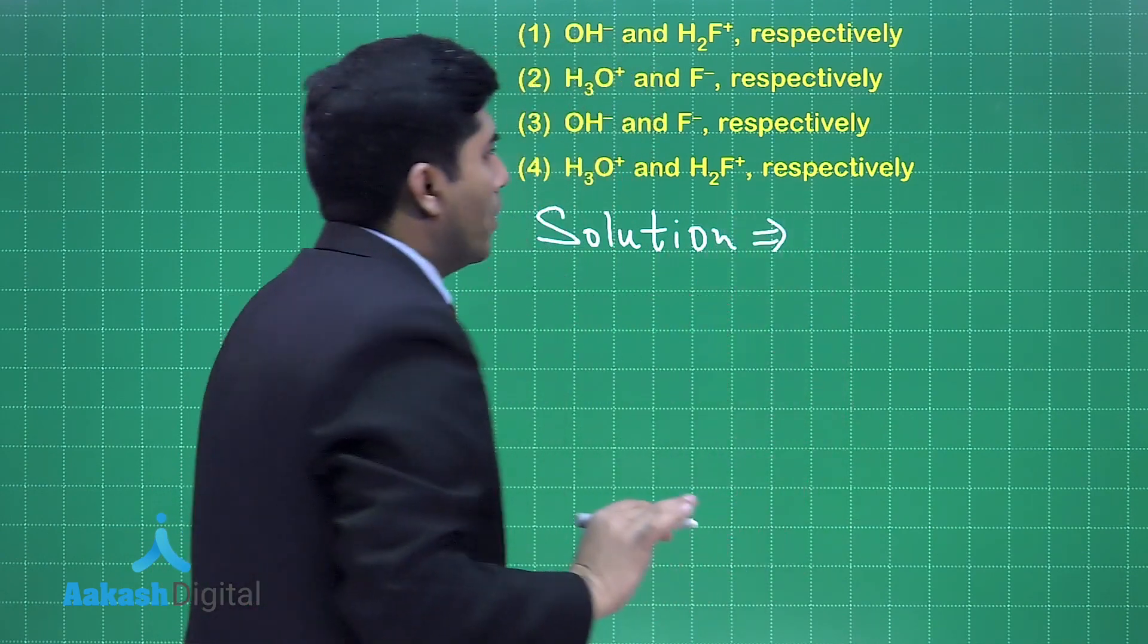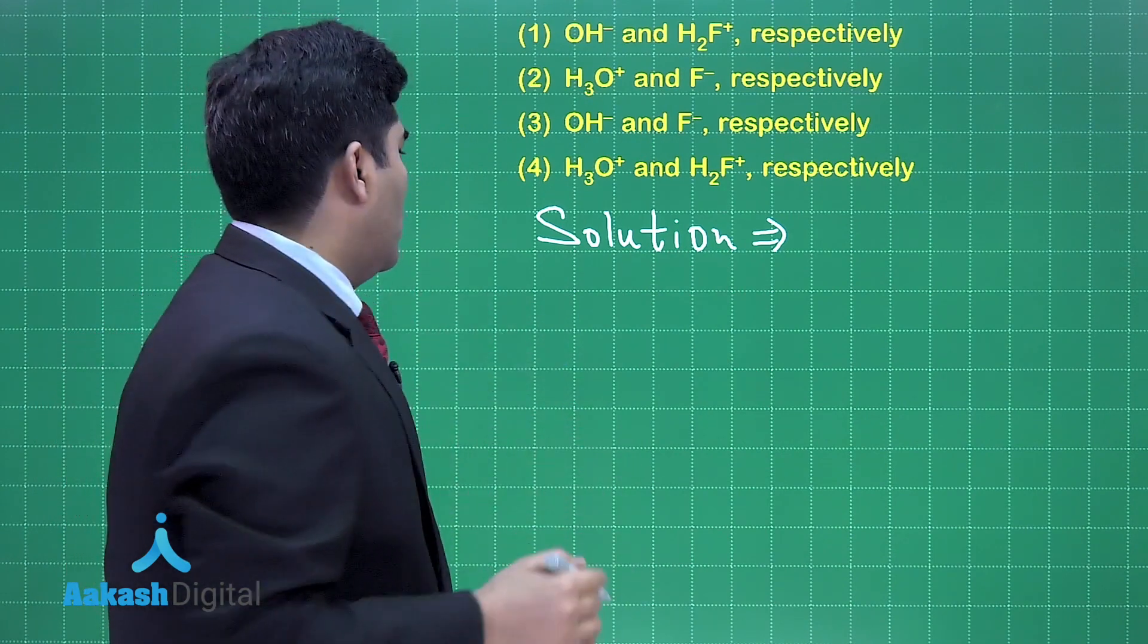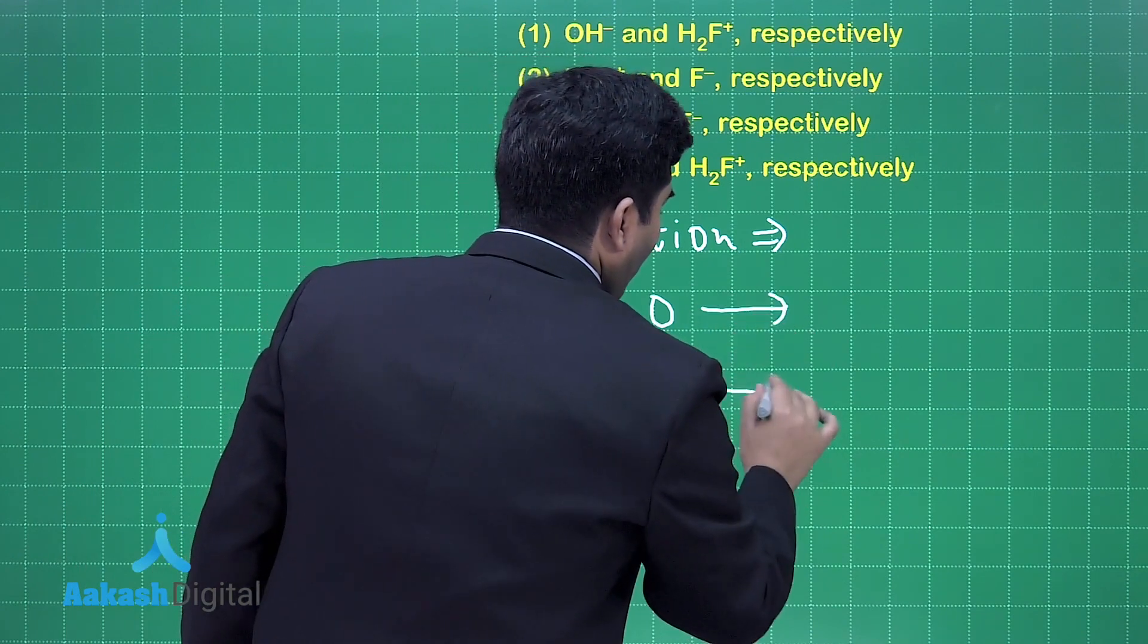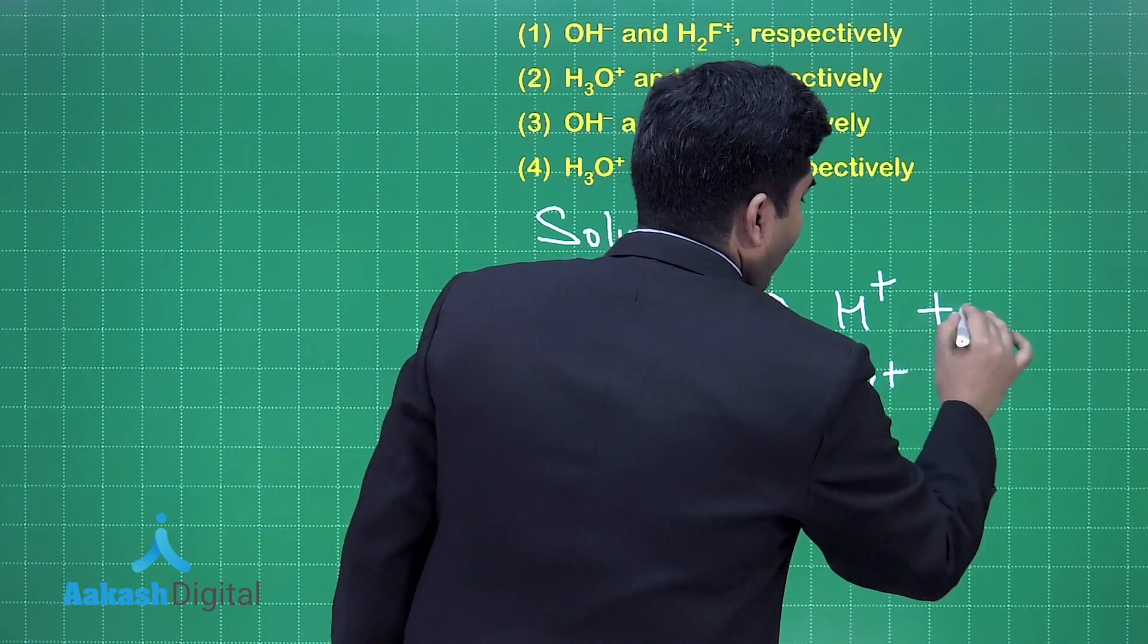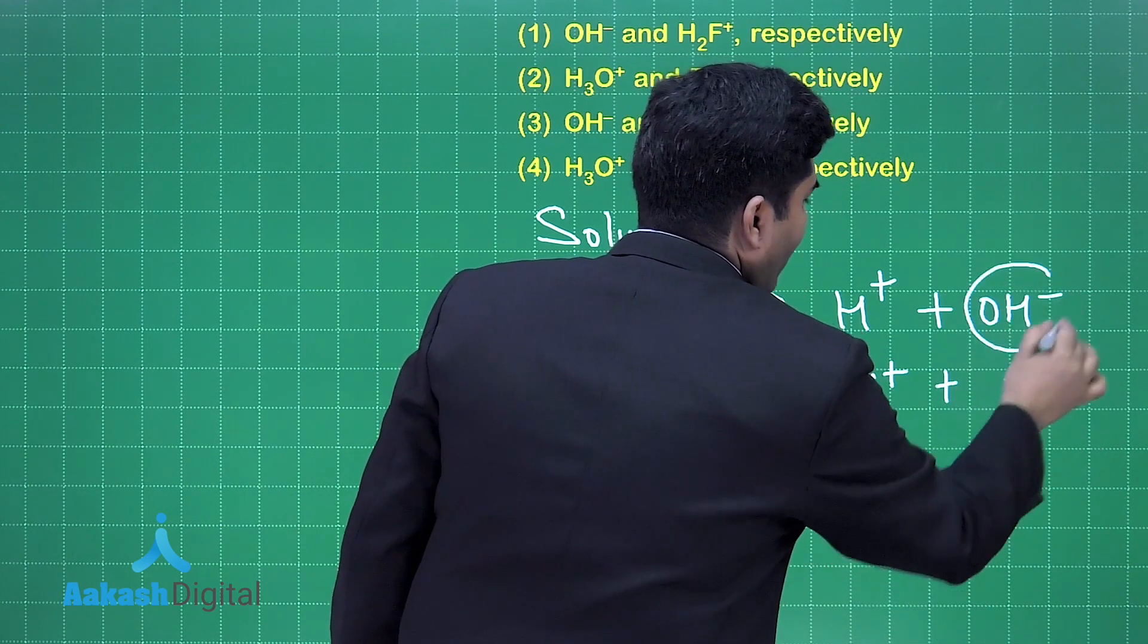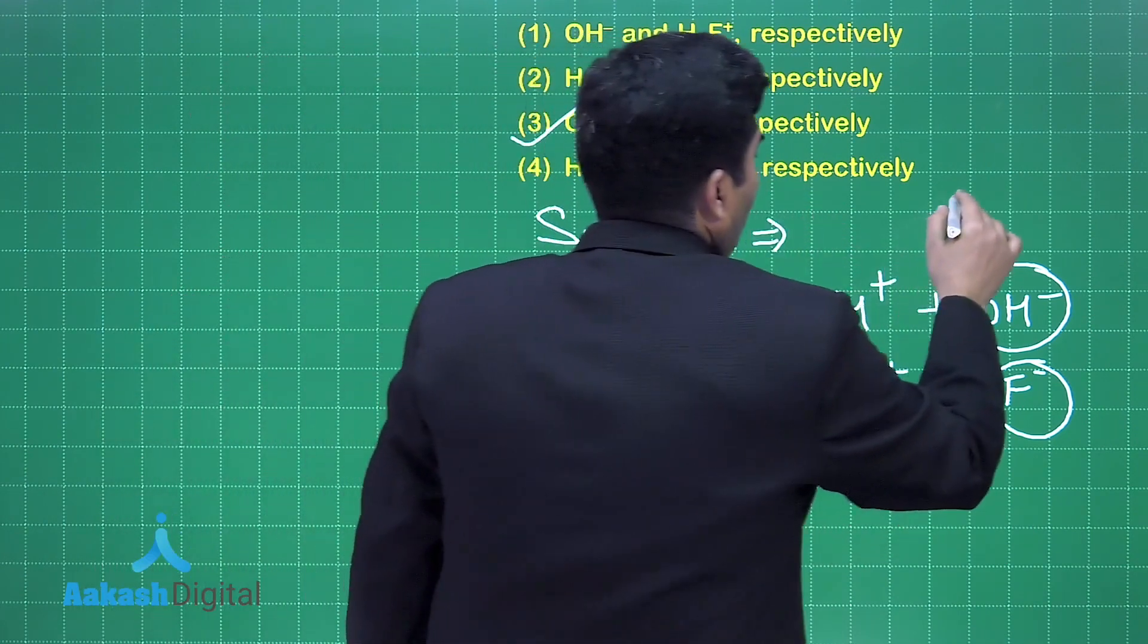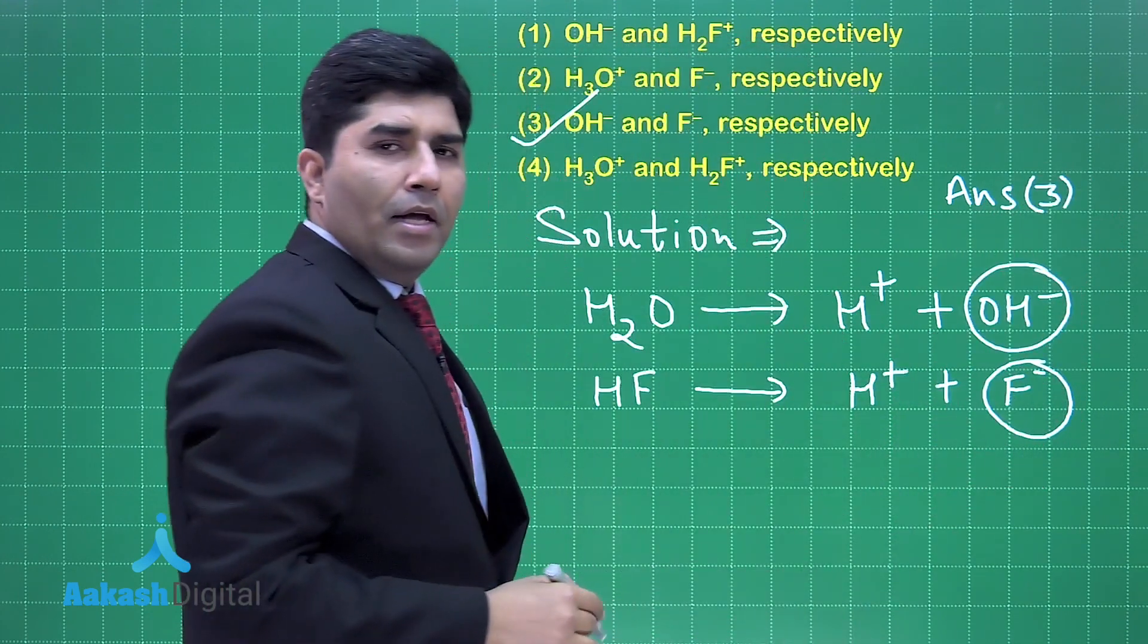Solution is we have to find out the conjugate base. The species given to us are acids, so water will act as acid, HF will act as acid. If they act as acid they will give us H⁺ ions, and the anion which is left, that is OH⁻ and F⁻, these are the conjugate bases of these acids. Therefore the answer is option number three.